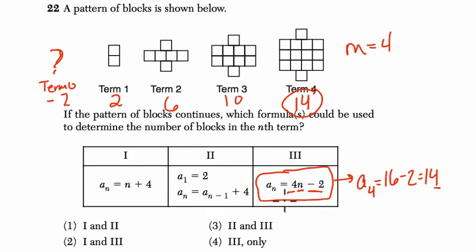The other one that works here is choice two. Choice two says, in a different way, it's recursive now, that the first term has two blocks, which it does. Term one has two blocks. Then, to find the next term, or any term, you take the one before it, that's what a n minus one equals, the one before a n, and then add four.